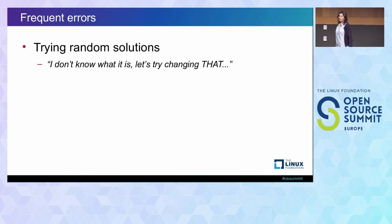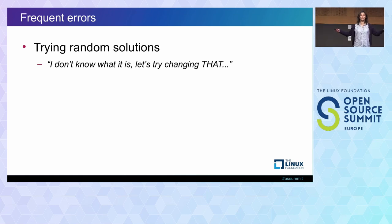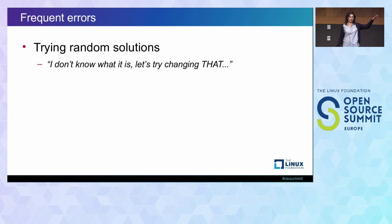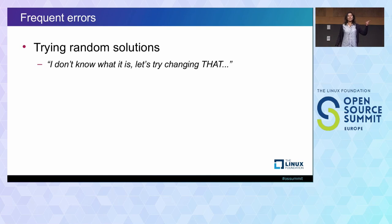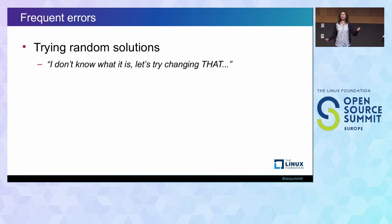Let's start with things I have seen over the years — frequent errors when people are debugging applications. The first and most common one is trying random solutions. I don't know what's happening, but I'm going to change that. That may be changing the file system, changing the network card, changing the component. Usually, it's not really fixing the problem.